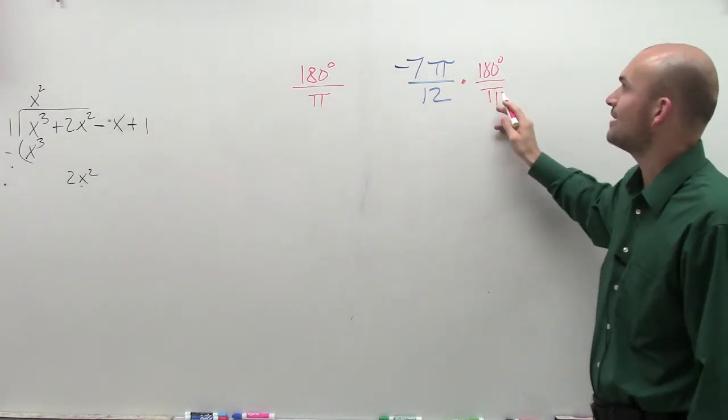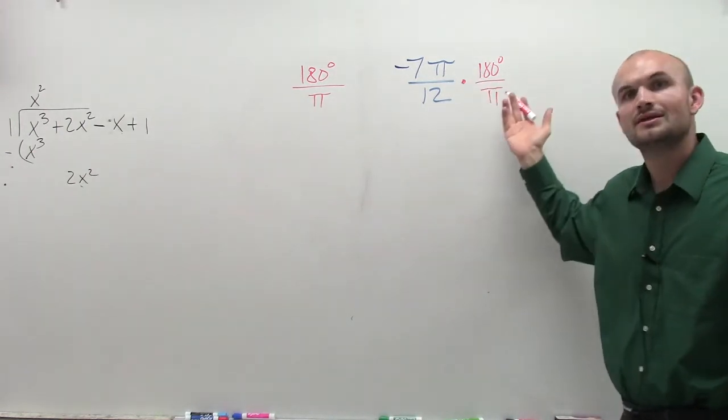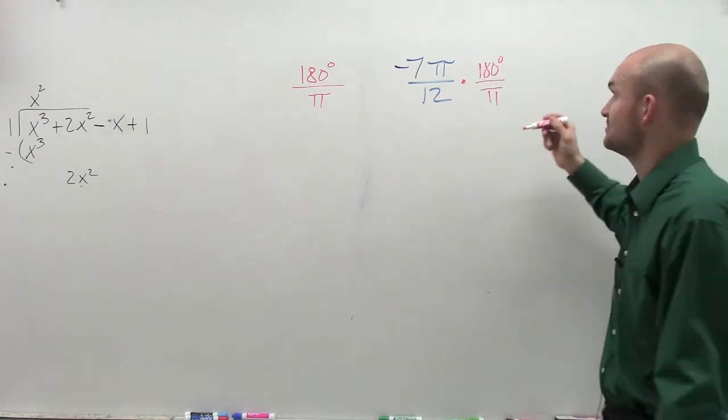And by taking pi divided by pi, you're now going to divide out each other, or cancel out, sometimes you might say.